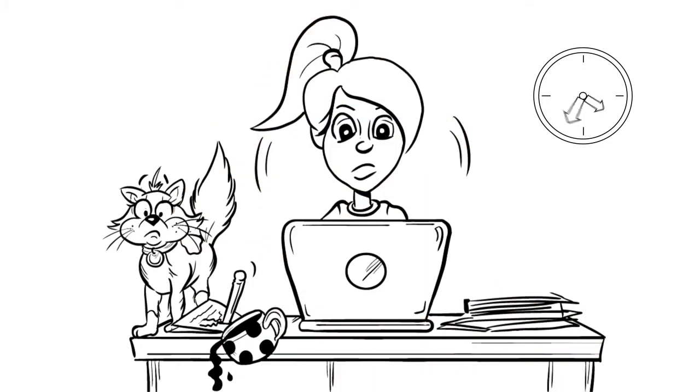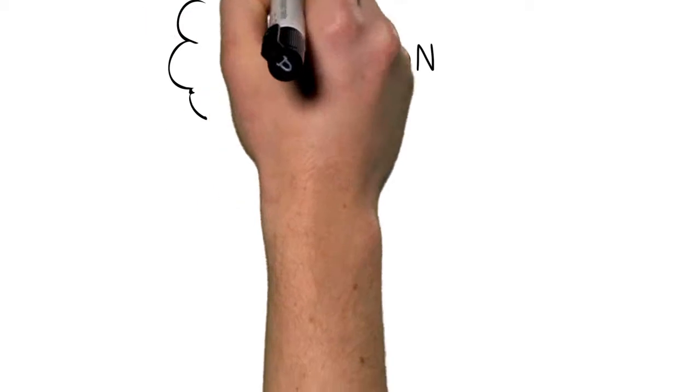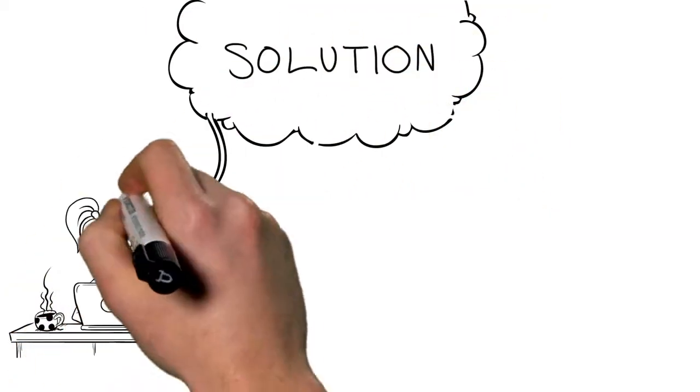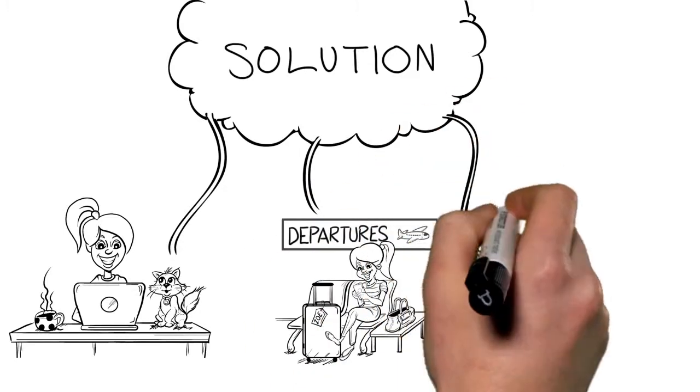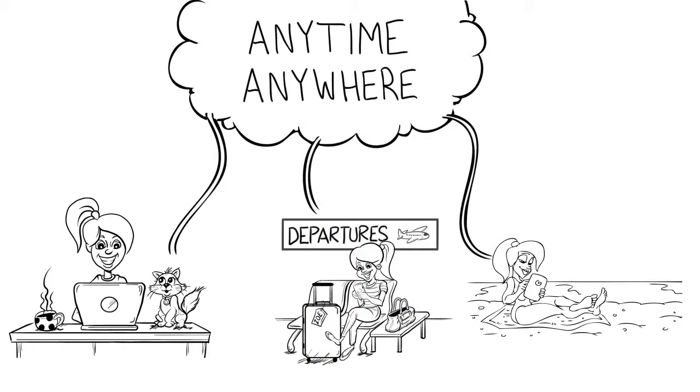So instead of Zoe staying on top of her work, she winds up feeling frustrated and further behind. But there is a solution. By moving her data and applications to the cloud, Zoe can access her data from home, while she's travelling and even while she's enjoying herself at the beach, anytime, anywhere. As long as she has an internet connection, she can access her data.